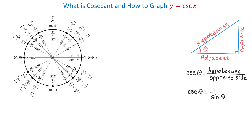If we look at the unit circle, the values of sine are represented by the y-coordinates of these points on the unit circle. We write that sine of any angle theta on the unit circle is equal to y. For example, sine of pi over 6 equals 1/2. This is because this circle has radius 1, and if from this point we draw a perpendicular down, we will form a right triangle. In this triangle, the angle is pi over 6, the opposite side is 1/2, and the hypotenuse is 1. Then 1/2 divided by 1 is still 1/2.